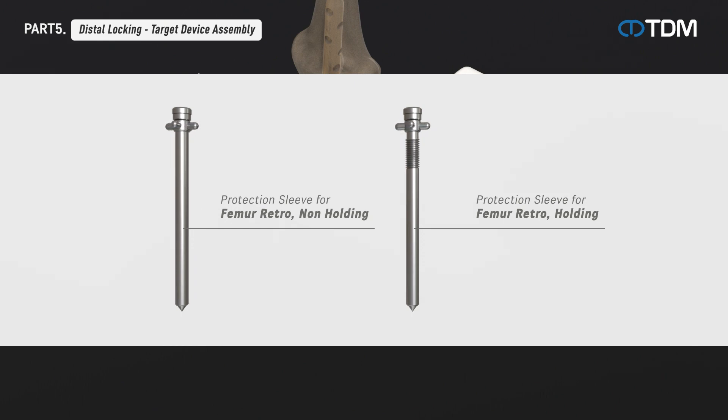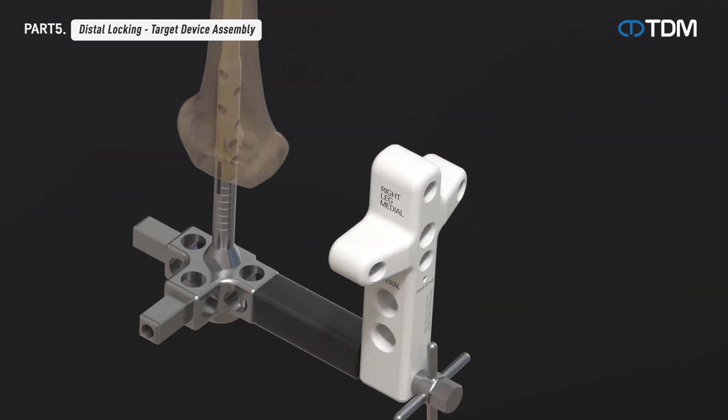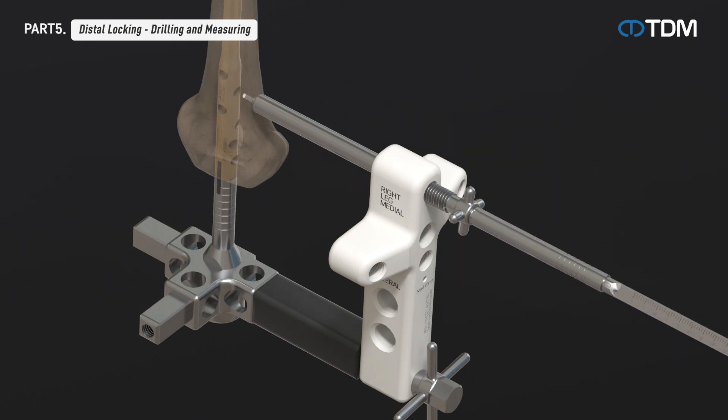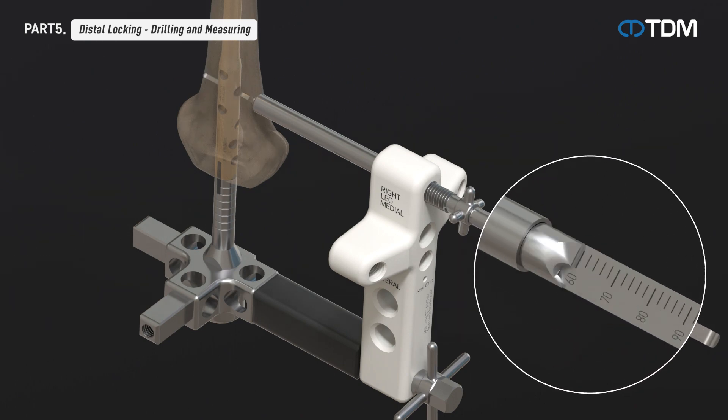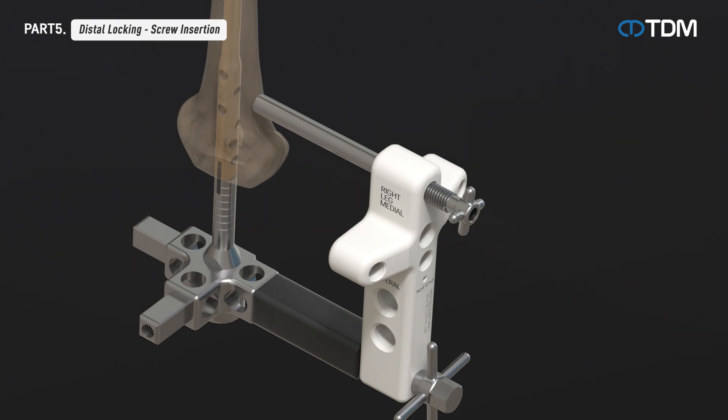There are two types of protection sleeves depending on whether there is a thread or not. Select and use them according to needs. Remove the trocar from the combination of protection sleeve, drill sleeve, and trocar, then drill until the drill bit penetrates both cortex and measure the depth with the depth gauge to determine the length of the screw. Using a screwdriver, insert the locking screw through the protection sleeve.